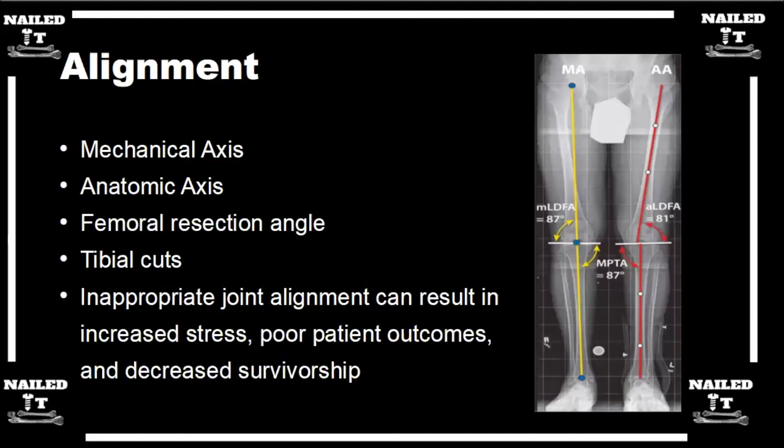The question I had is: we always hear or see numbers like 87 degrees and 81 degrees on the distal femur angle. Where do all these numbers come from? How do they come up with that? Because those always pop up on pictures, and I remember being confused — I thought we were making five or six degrees of valgus. So where do those numbers come from?